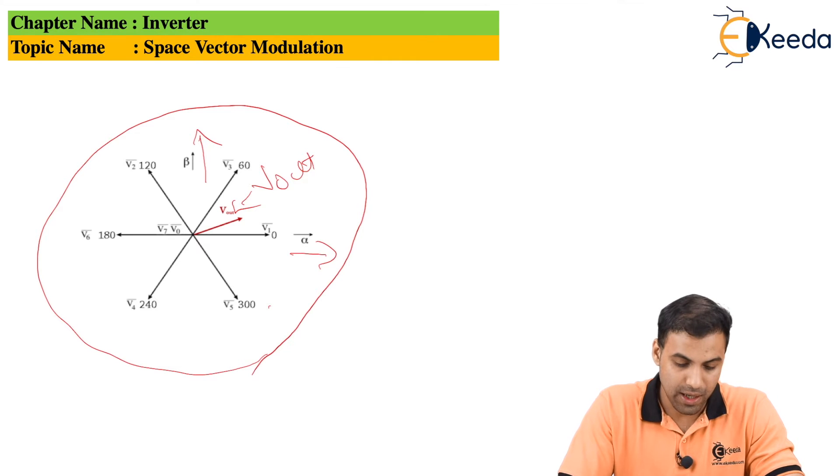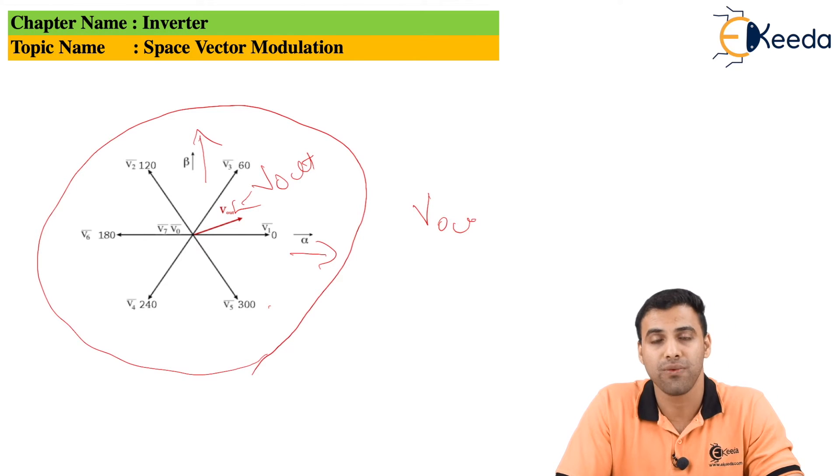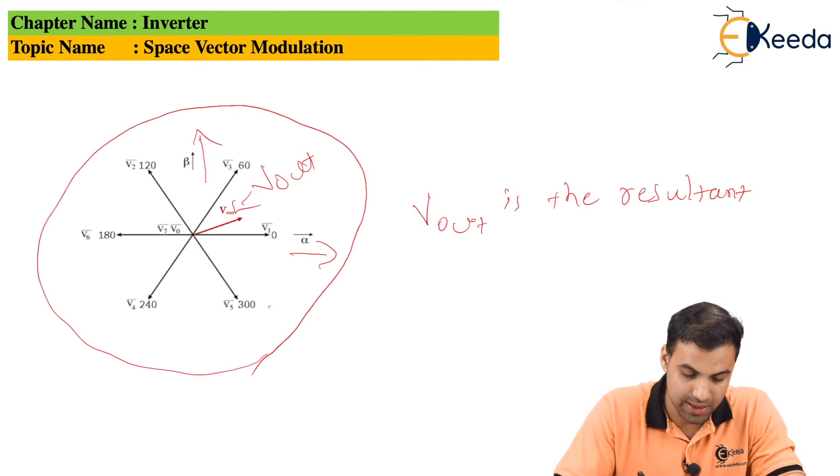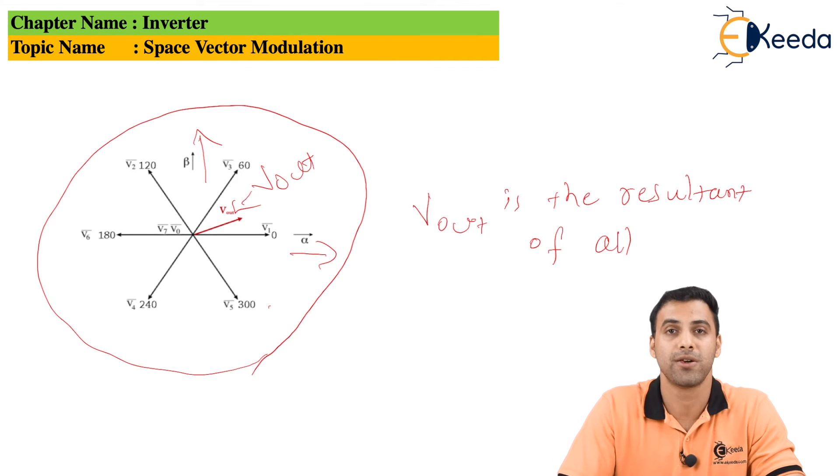What will be the output of all these voltages? The final output, which is the V out here you can clearly see, will be the resultant of all null vectors.